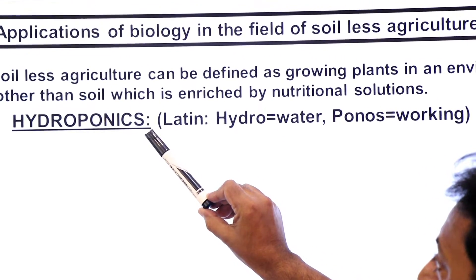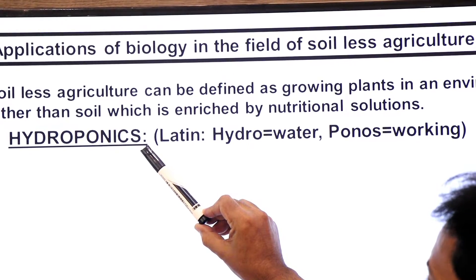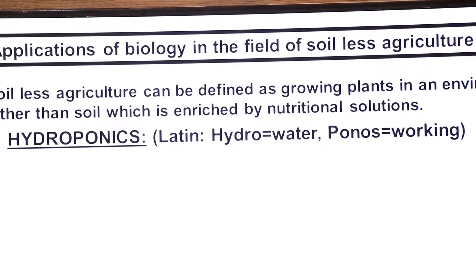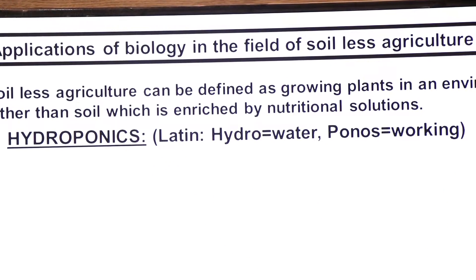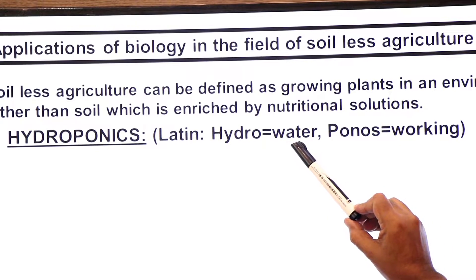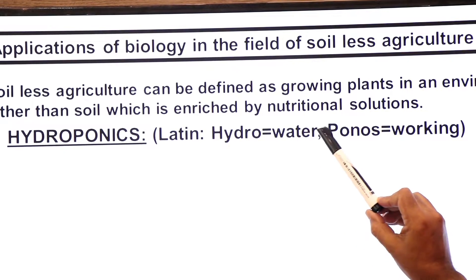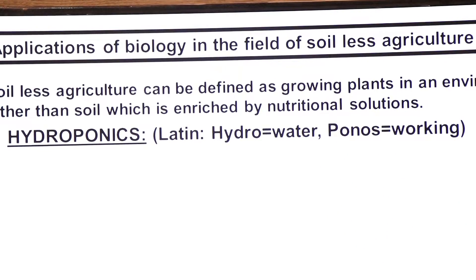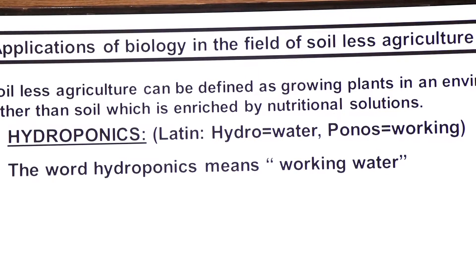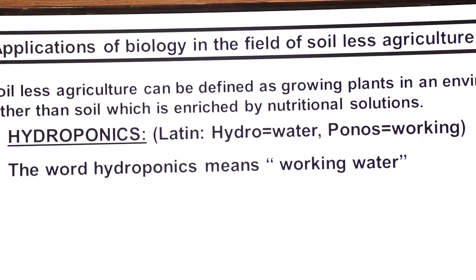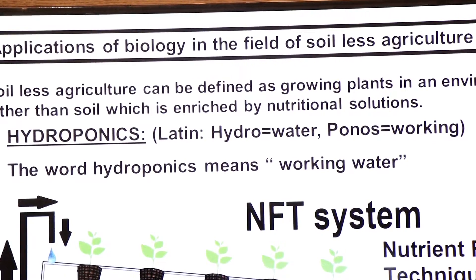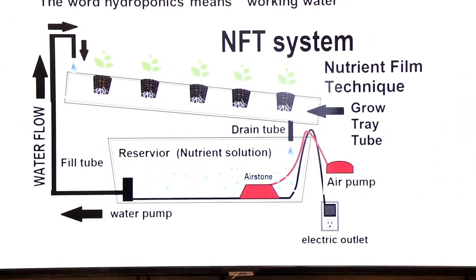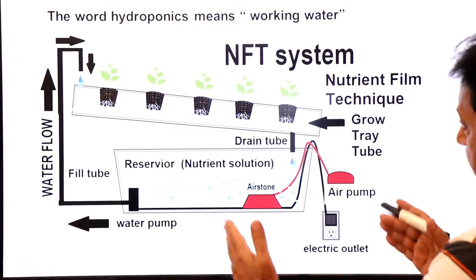The science we are studying is called hydroponics. The word hydroponics comes from the Latin word: 'hydro' means water and 'ponos' means working. So the term hydroponics means 'working water.' Here you can see a picture of a hydroponics kit.